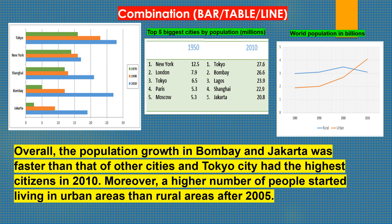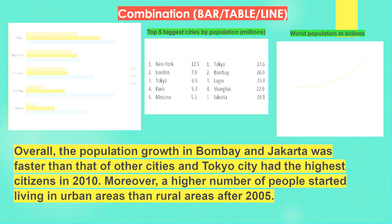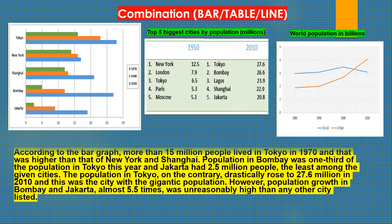Overall, the population growth in Bombay and Jakarta was faster than that of other cities, and Tokyo city had the highest citizens in 2010. Moreover, a higher number of people started living in urban areas than rural areas after 2005. According to the bar graph, more than 15 million people lived in Tokyo in 1970, which was higher than that of New York and Shanghai. The population in Bombay was one-third of the population in Tokyo that year, and Jakarta had 2.5 million people — the least among the given cities. The population in Tokyo drastically rose to 27.6 million in 2010, making it the city with a gigantic population. However, population growth in Bombay and Jakarta of almost 5.5 times was unreasonably higher than any other city listed.